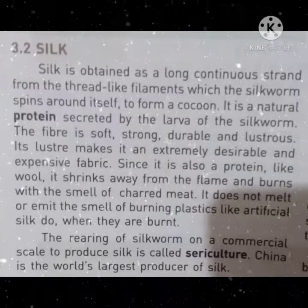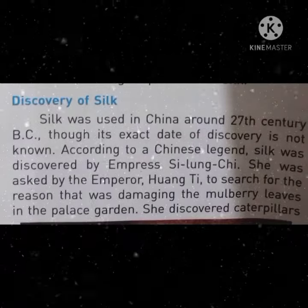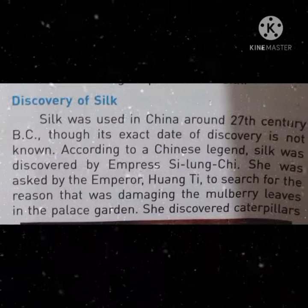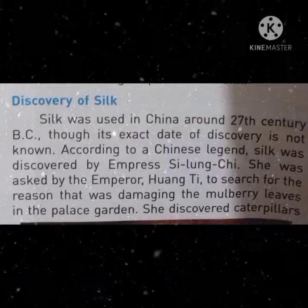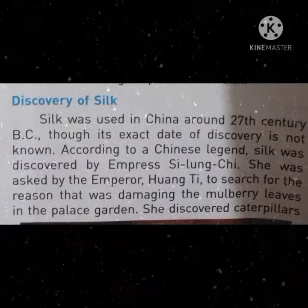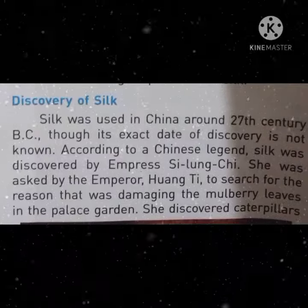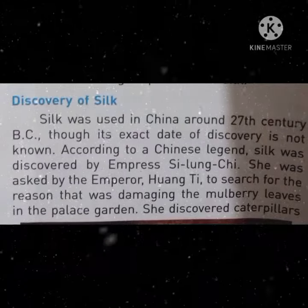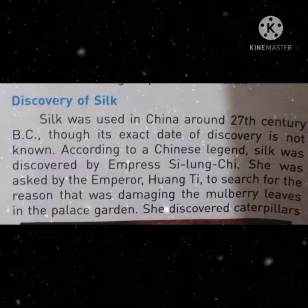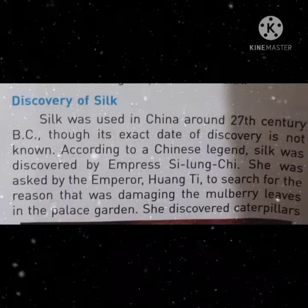China is the world's largest producer of silk. Silk was used in China around the 27th century BC, though its exact date of discovery is not known. According to a Chinese legend, silk was discovered by Empress Lei Zu, who was asked by the Emperor Huang Ti to search for the reason that was damaging the mulberry leaves in the palace garden.